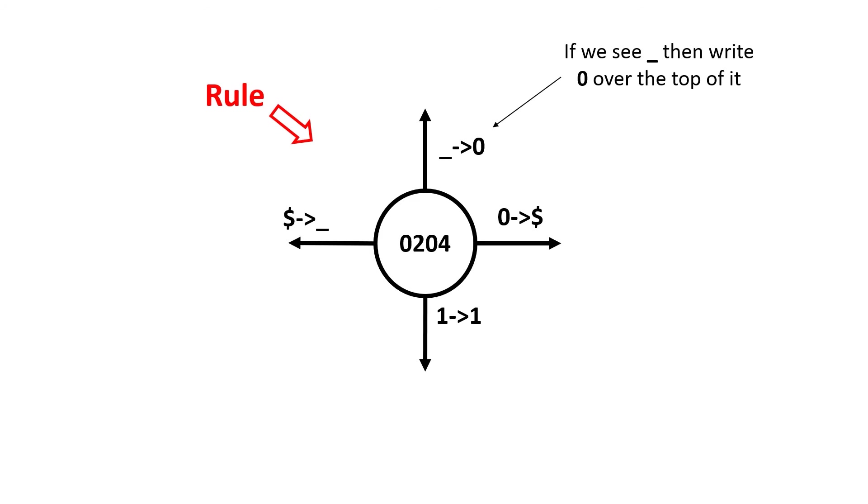These are called arcs and we can add extra information to the arc. Here I've got a symbol followed by an arrow then another symbol. The first symbol is what I found on the notepad at our current location and the second symbol is what I want to write over the top of the first symbol. So if I happen to be in rule 204 and I see the underscore, then I write a zero over the top of it. Similarly, if I see a zero, then I write a dollar over the top of it.